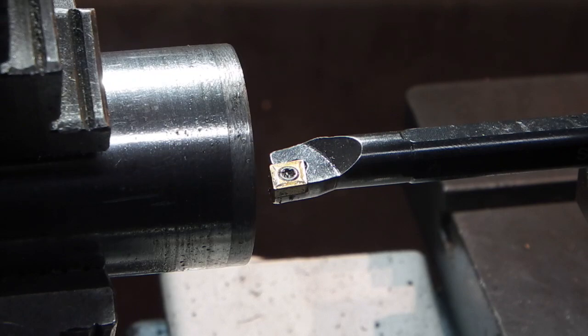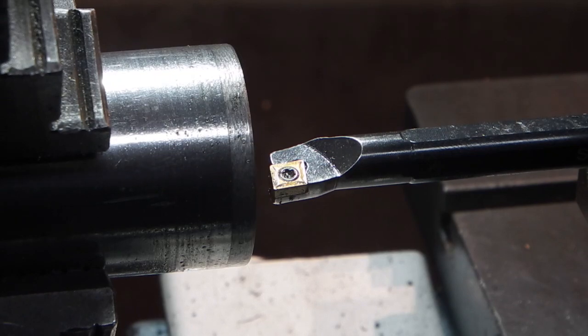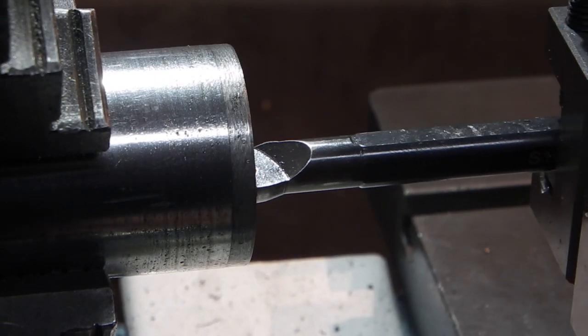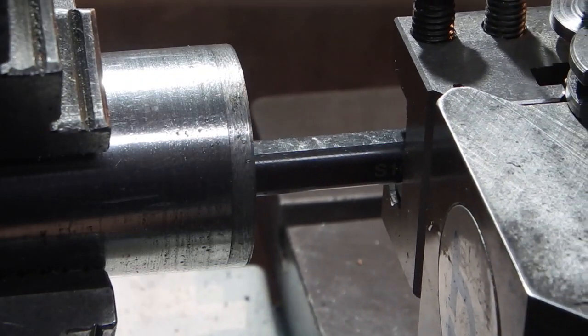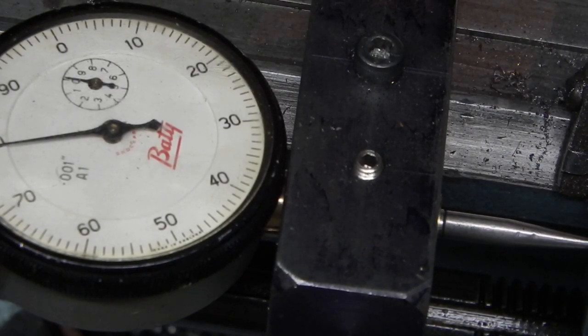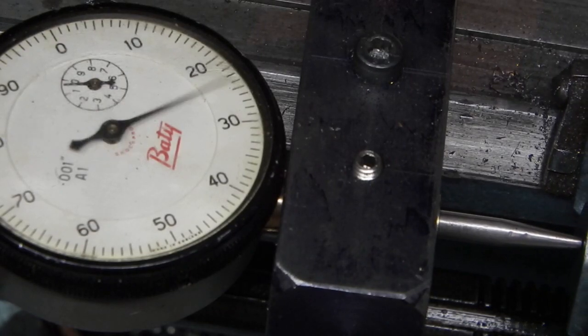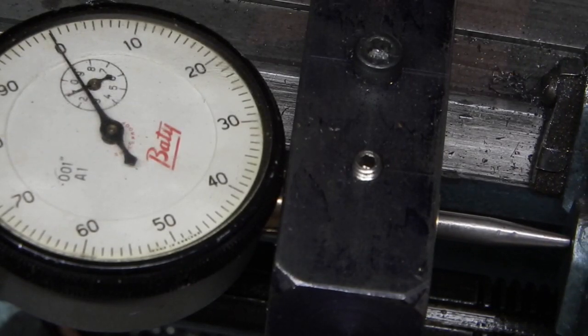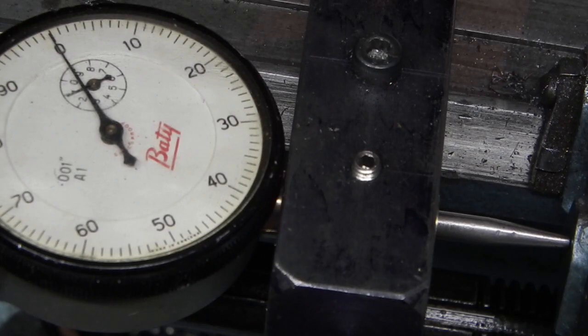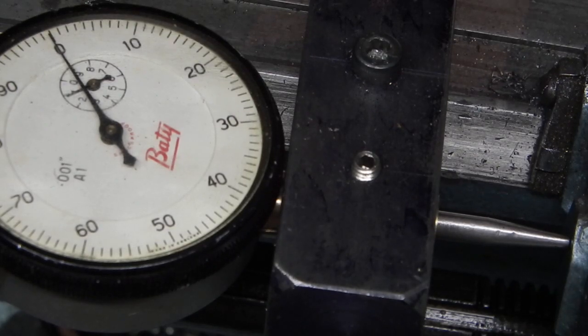I've set my boring bar up and a dial indicator on the saddle so when the boring bar goes to the end of the bore the indicator on the saddle will go one revolution to zero and I know that then the tool is at the depth I need.